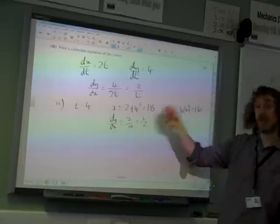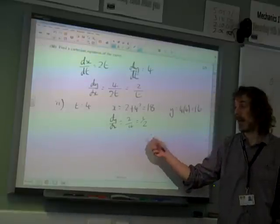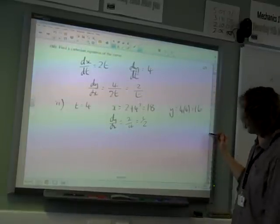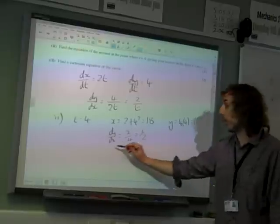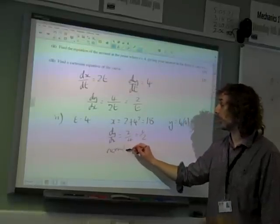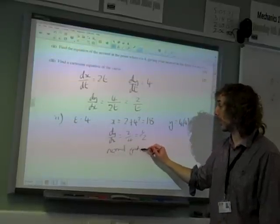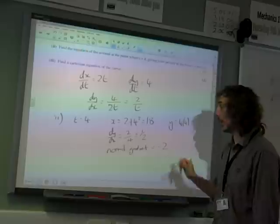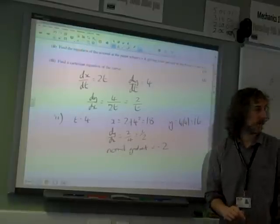Now that would be the gradient of the tangent, wouldn't it? And we've been asked for the gradient of the normal, or the equation of the normal to the curve. So the normal gradient is the negative reciprocal of that. So that would be minus 2. Turn it over and change the sign.